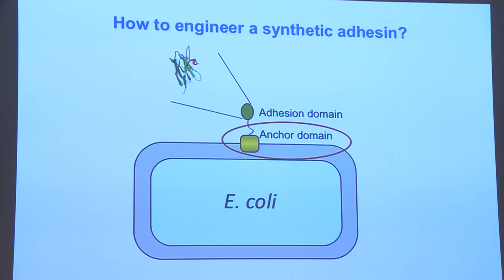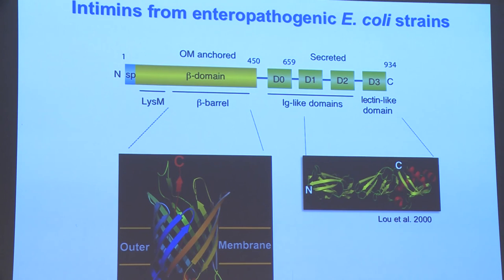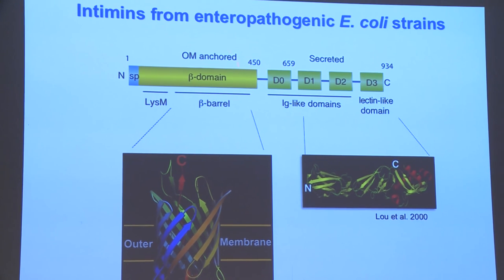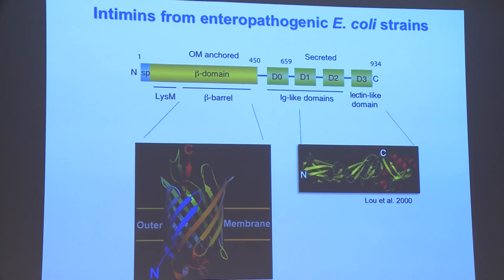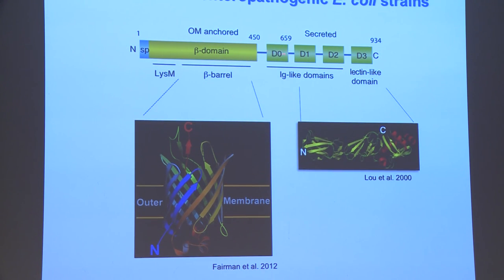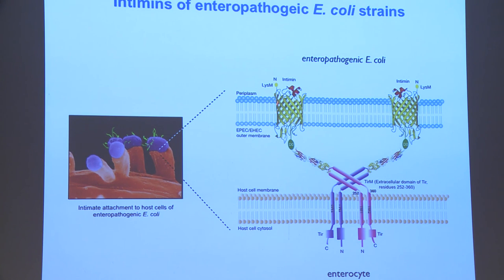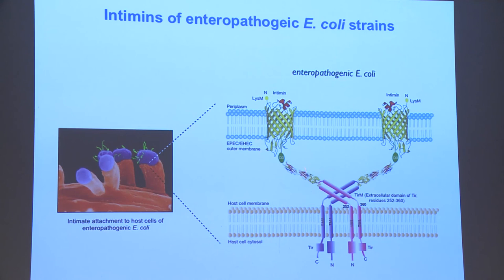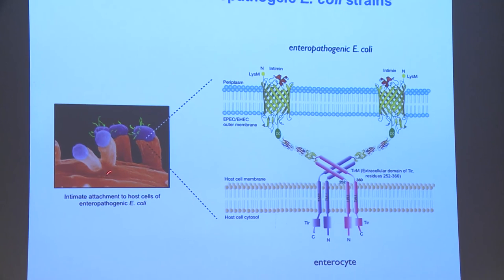The anchor domain proteins that worked best were derived from enteropathogenic and enterohaemorrhagic E. coli — proteins called intimins. Intimins are expressed on the surface of these strains and allow bacteria to attach to enterocytes. They carry a barrel domain that anchors in the outer membrane and displays Ig-like domains toward the surface. The bacteria attach using intimins, which display these Ig-like domains to contact a specific receptor injected into the enterocyte.